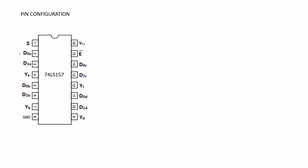Pin number 2 and 3 are the data lines of the first multiplexer. Pin number 4 is the output of the first multiplexer. Pin number 5 and 6 are the data lines of the second multiplexer. Pin number 7 is the output of the second multiplexer.